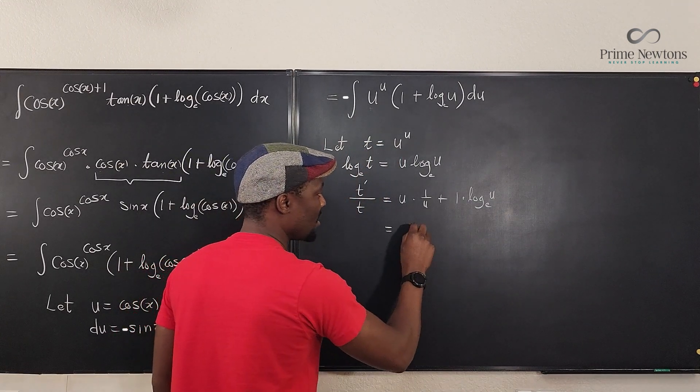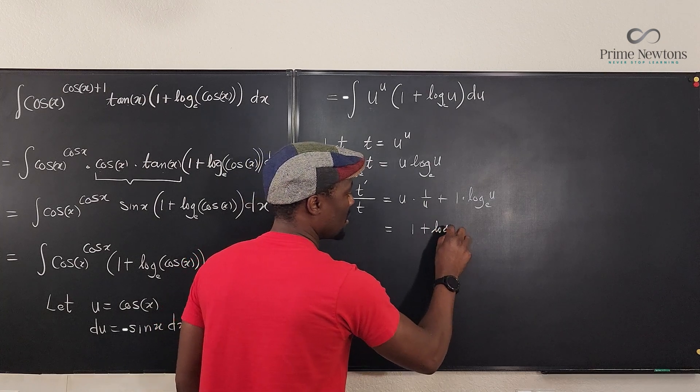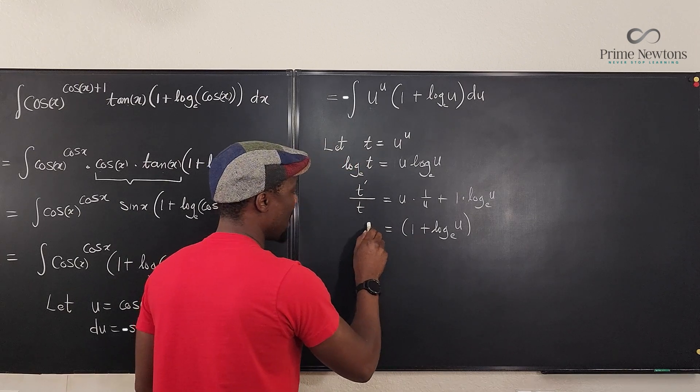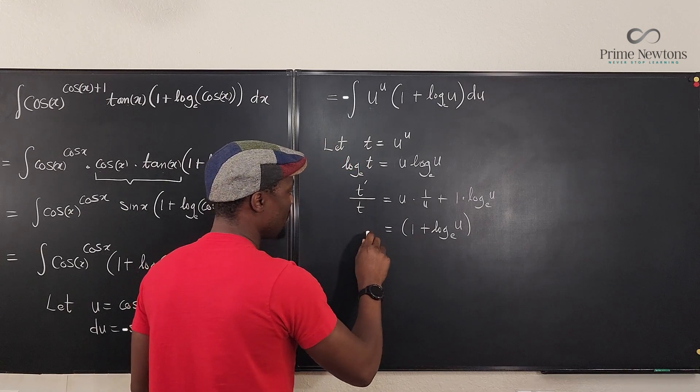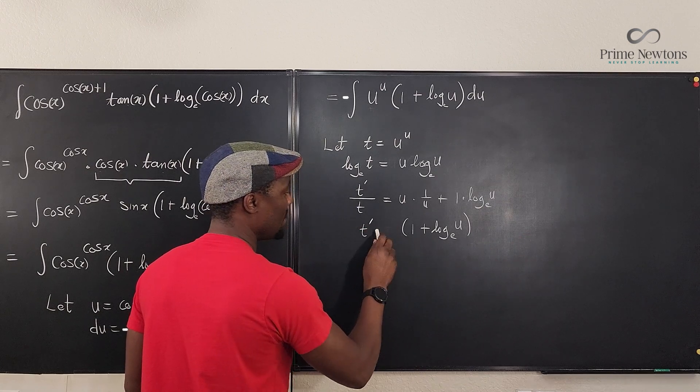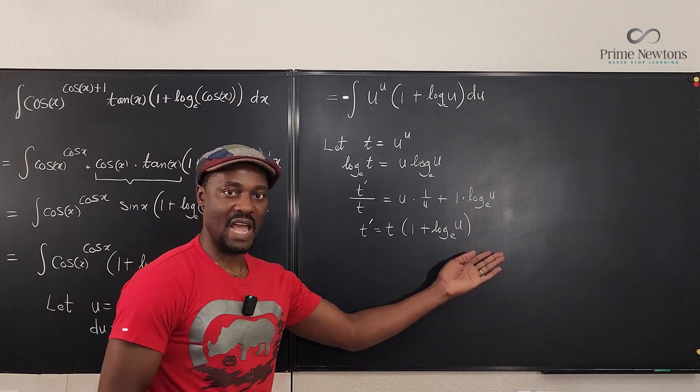Well, if we clean this up, this is going to be 1 plus log base e of u. That's what we get on this side. And here we have t prime over t. Well, I can write t prime and multiply both sides by t. Let me put the t here. So this is the answer.